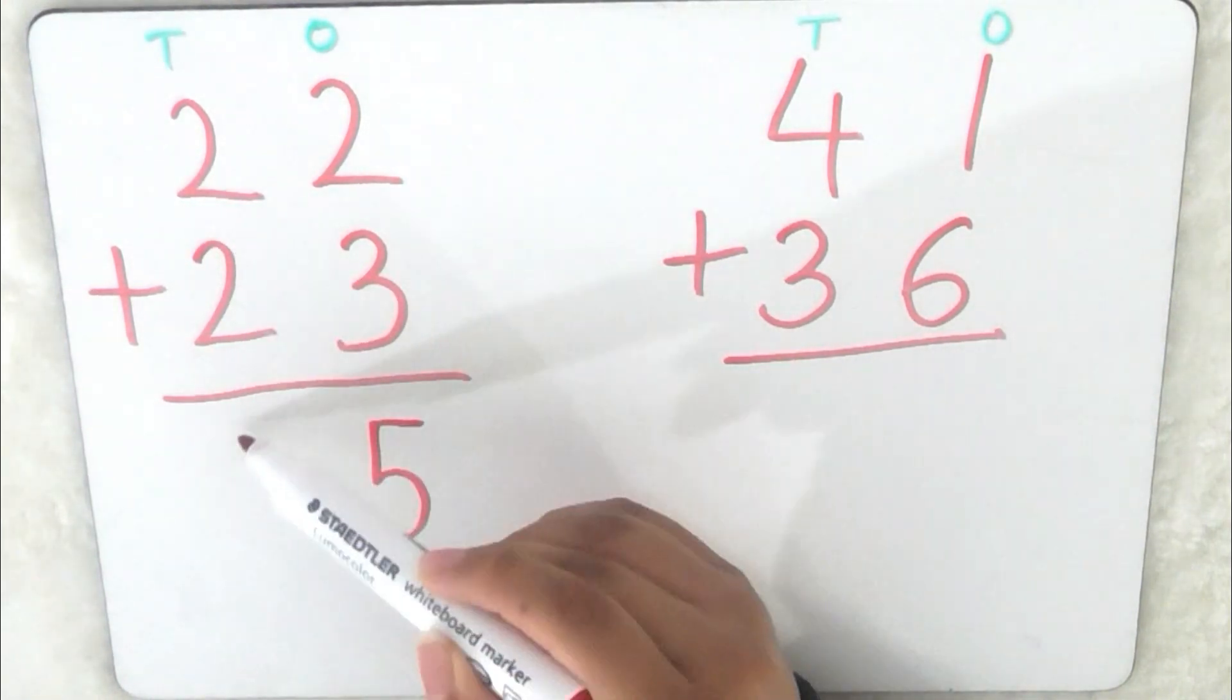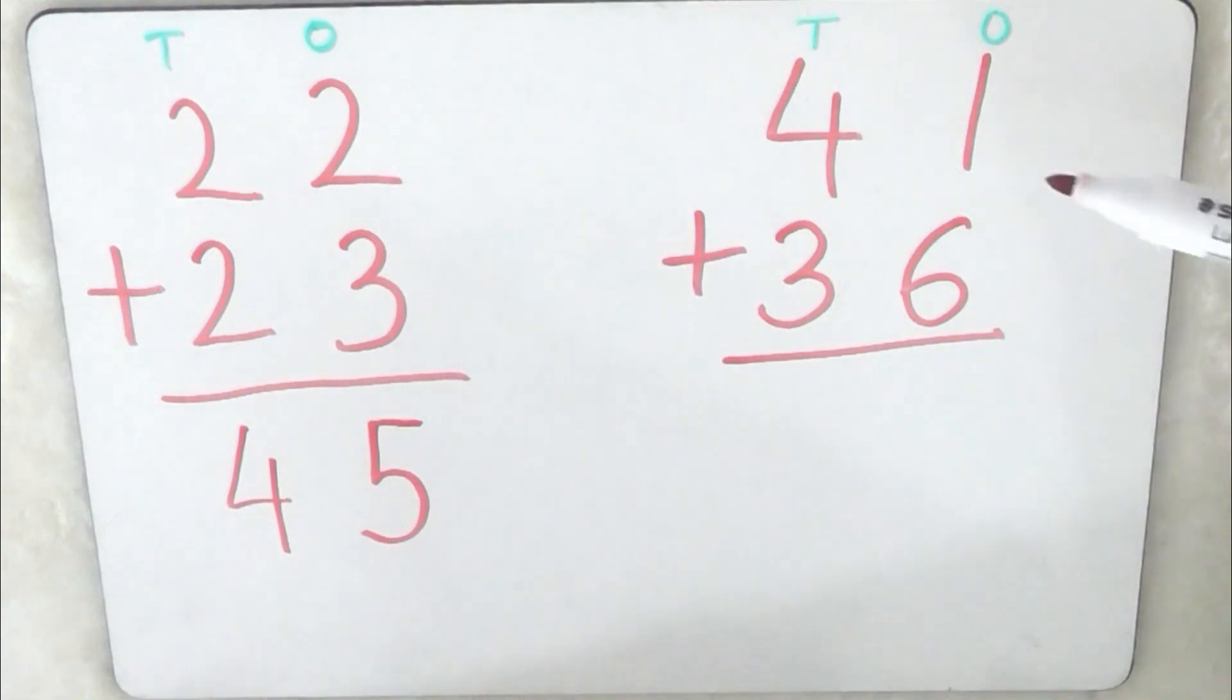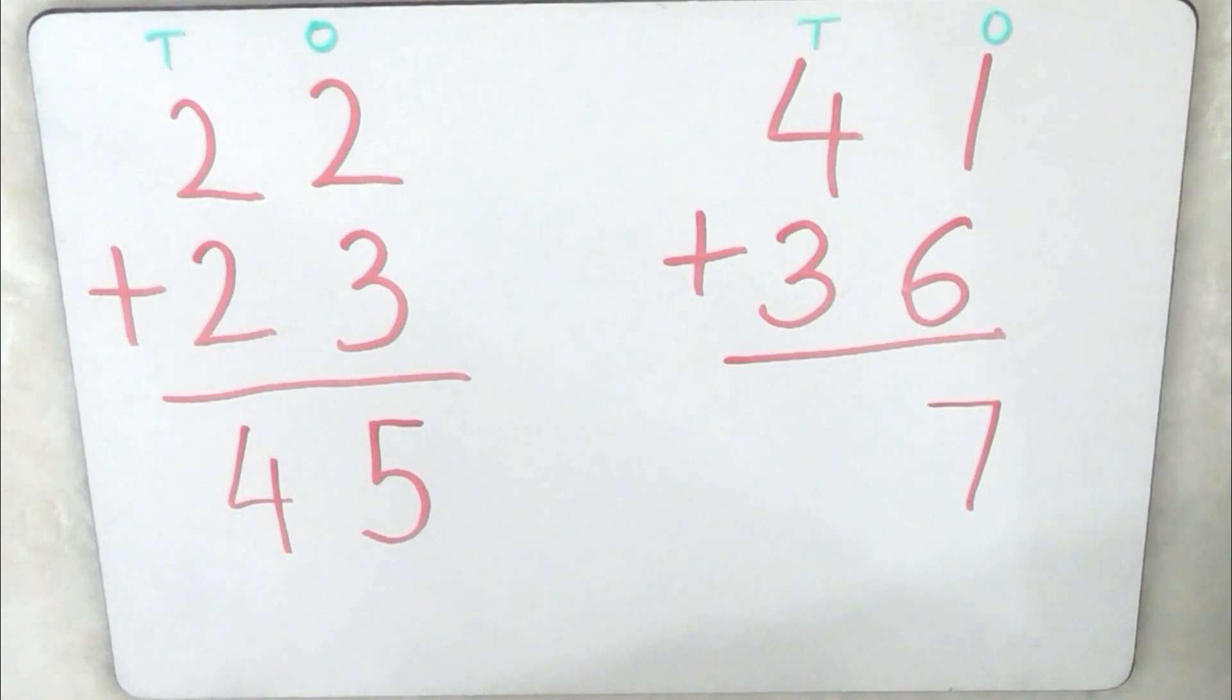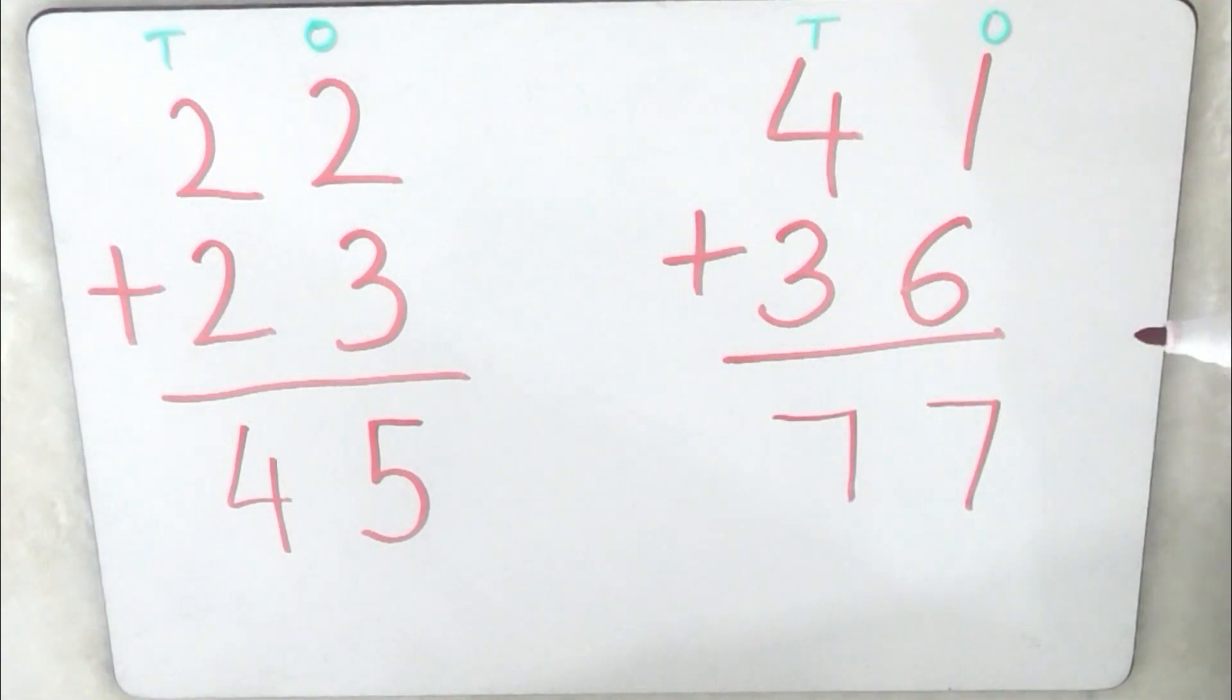So let's try this one, we start with the ones first, so that's 1 add 6, 1 add 6 is 7, so I put the 7. Then I try 4 add 3, so 4 add 3 is 7, that's right. So that means the answer is 77. Well done if you got that right, bye for now.